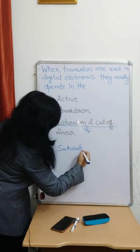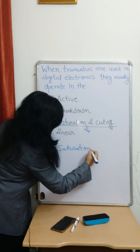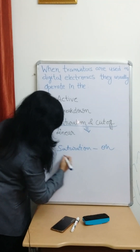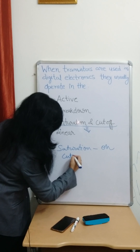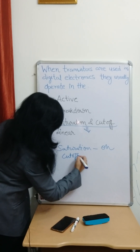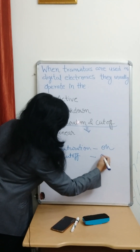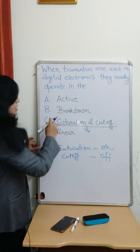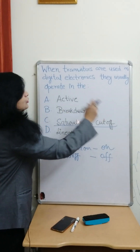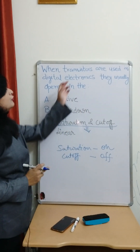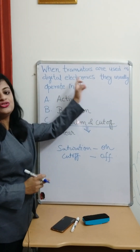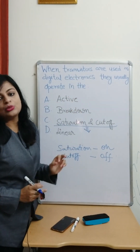When the transistor is in saturation region, it is on, and in cutoff region, it is off. That's why we use saturation and cutoff region for a transistor to act as a switch in digital electronics.